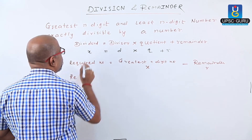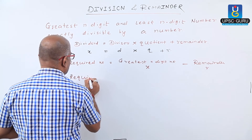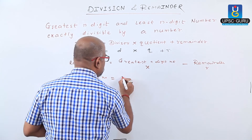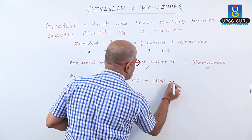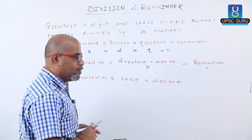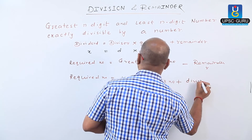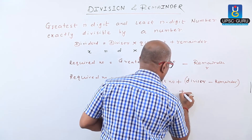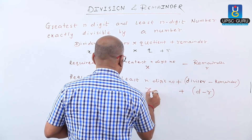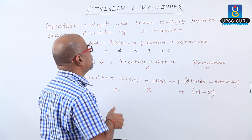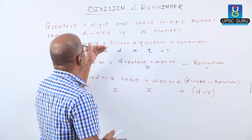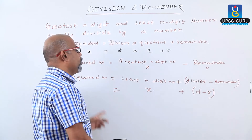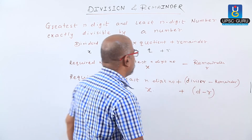Next, for the least n-digit number which is divisible by a given divisor: the required number equals the least n-digit number plus D minus R. We add divisor minus remainder to the least n-digit number to get the required answer. To get the greatest n-digit divisible number, subtract R; to get the least n-digit divisible number, add D minus R.